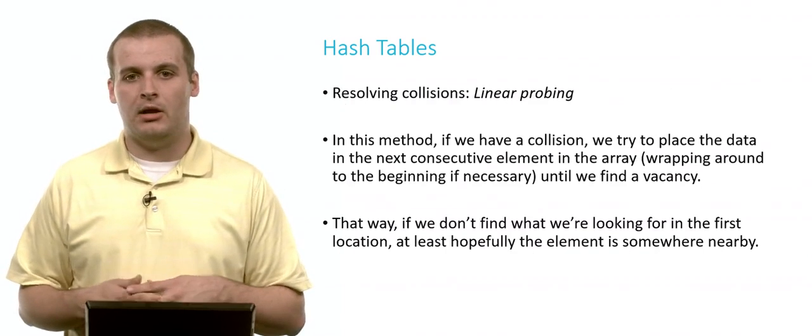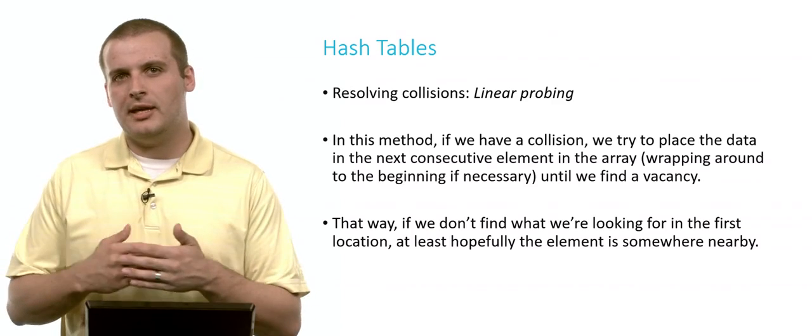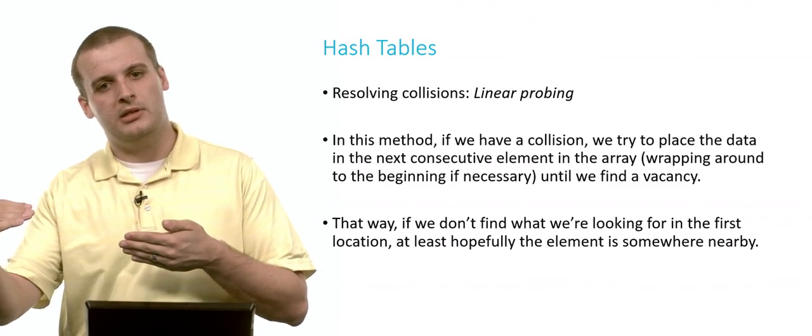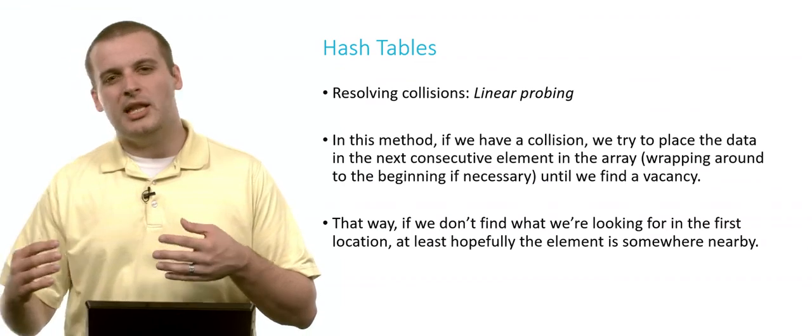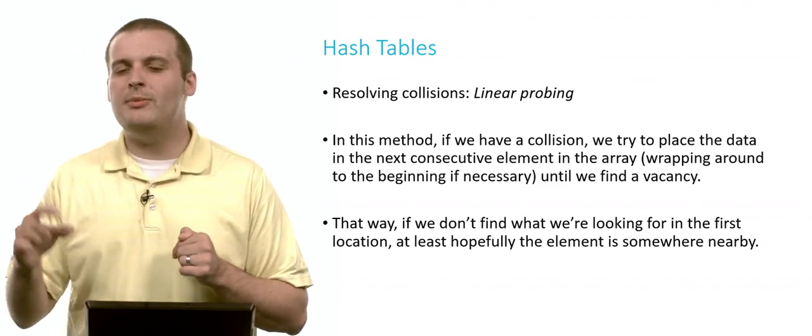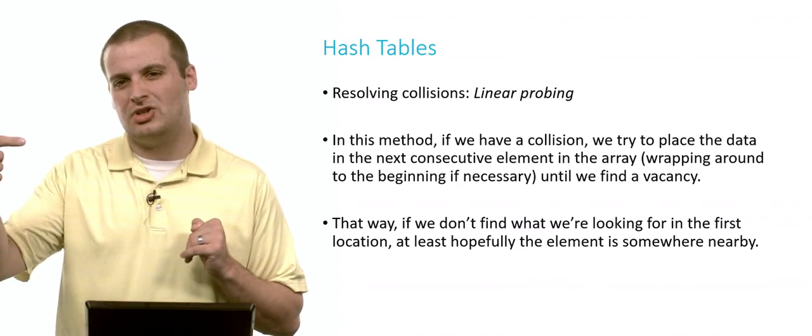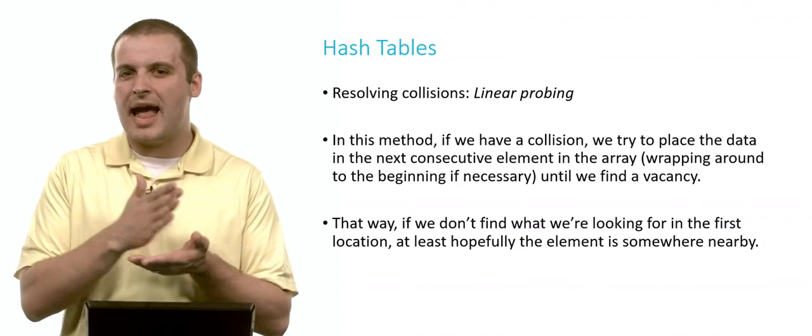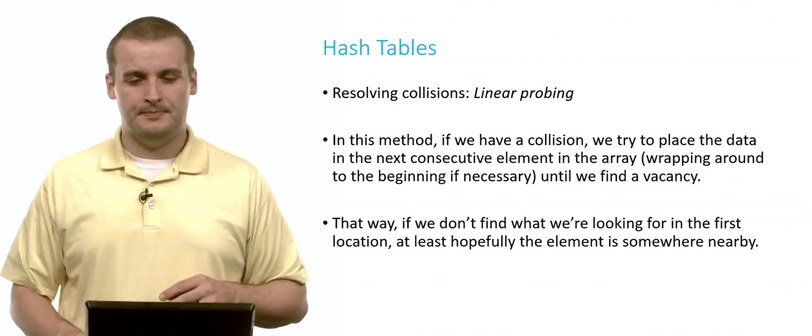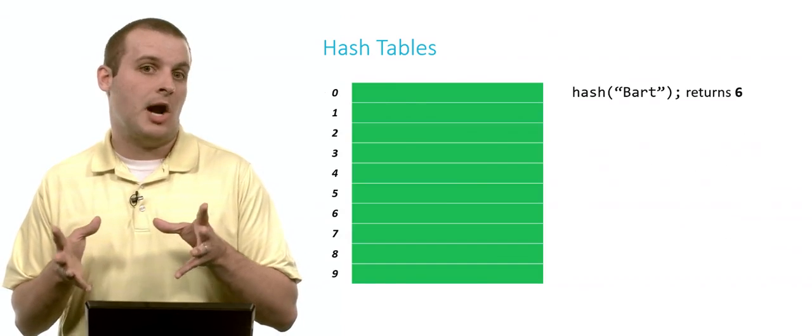We need to find a way to get elements into the hash table that still preserves our quick insertion and quick lookup. One way to deal with it is to do something called linear probing. Using this method, if we have a collision, if we can't put him in array location 6 or whatever hash code was generated, let's put him at hash code plus 1. And if that's full, let's put him in hash code plus 2. The benefit of this being, if he's not exactly where we think he is and we have to start searching, maybe we don't have to go too far. Maybe we don't have to search all n elements of the hash table. We're still tending towards that average case being close to 1 versus close to n.